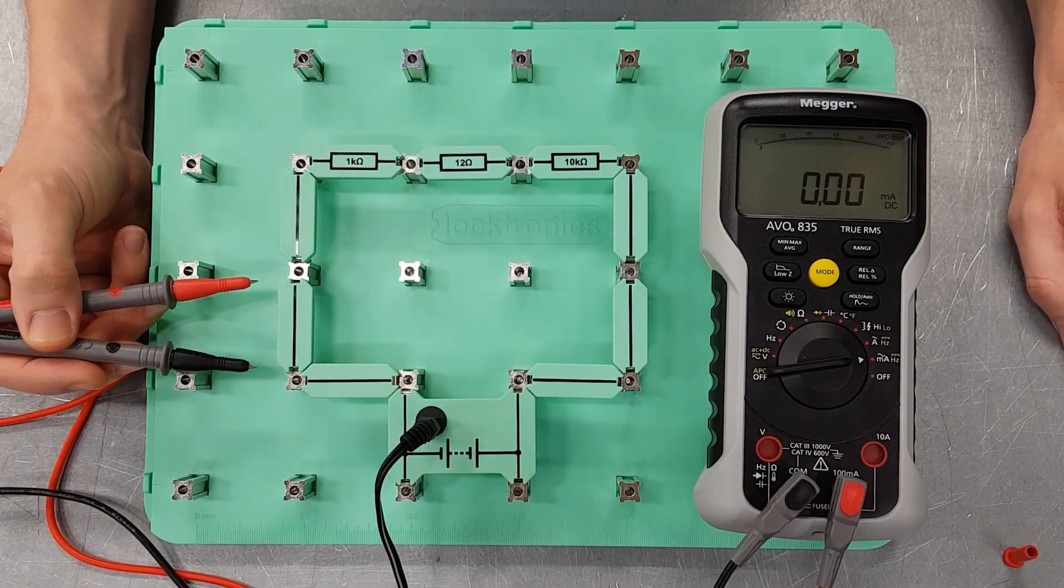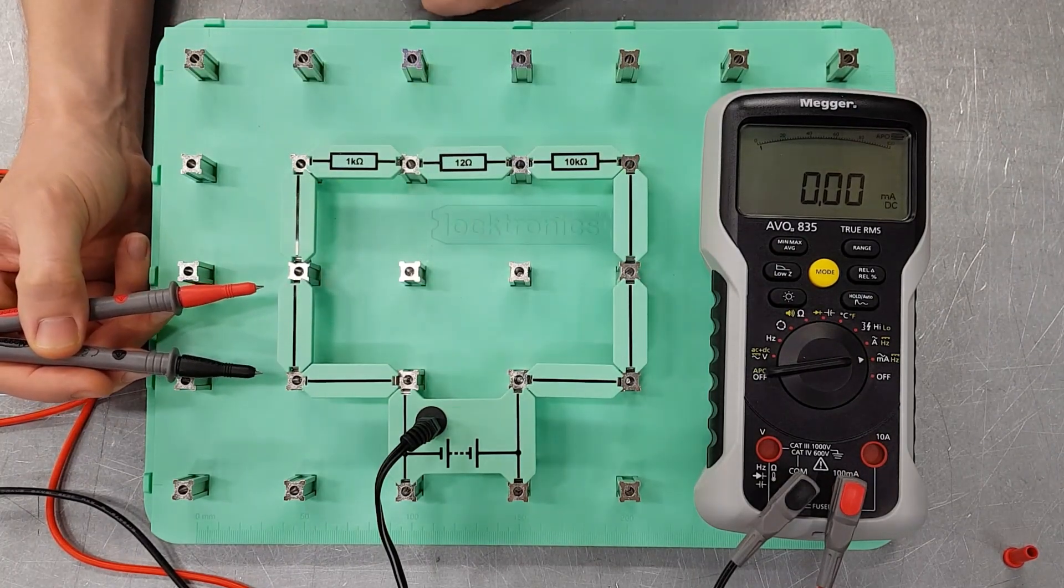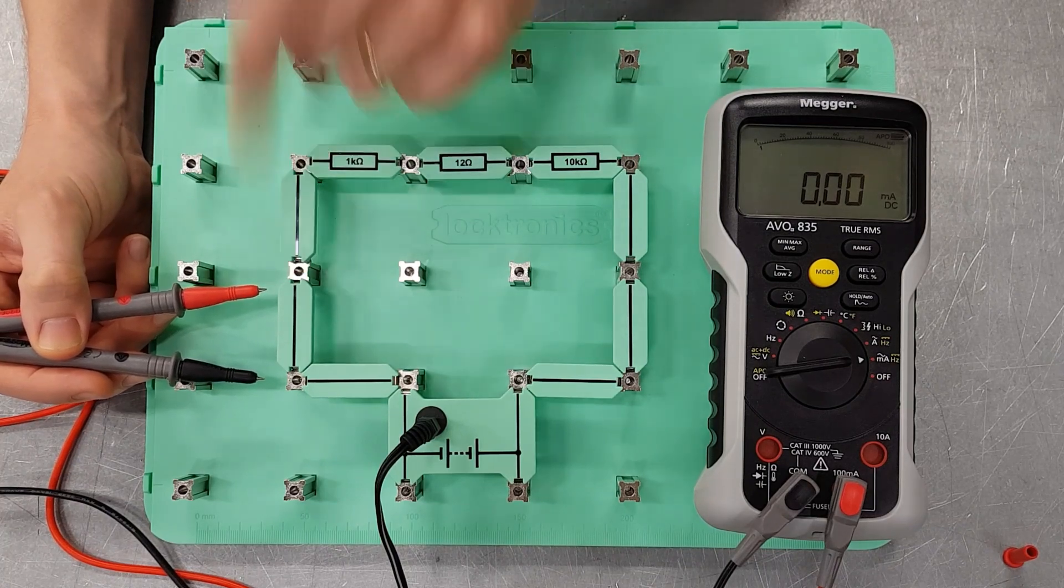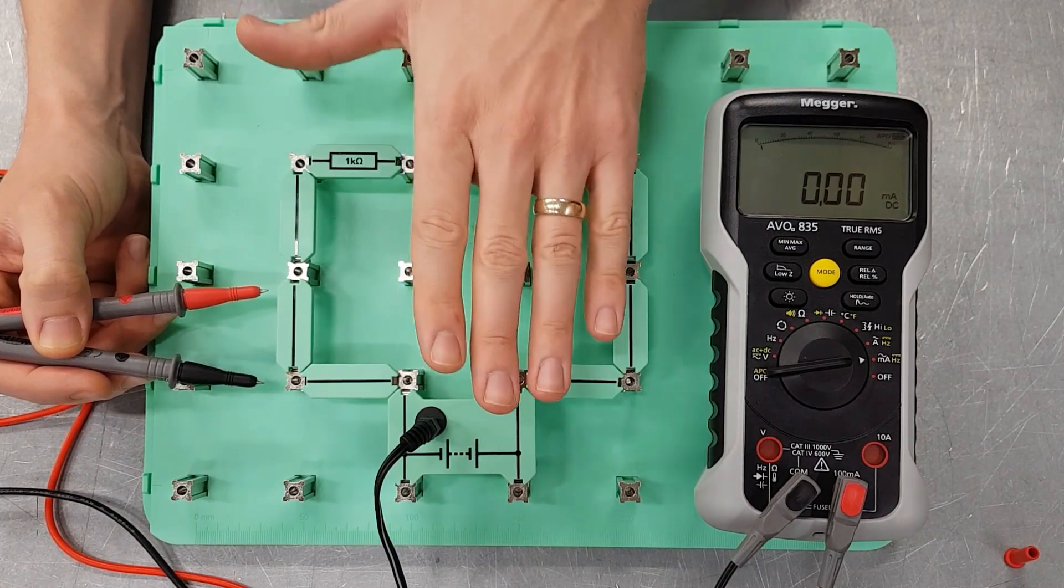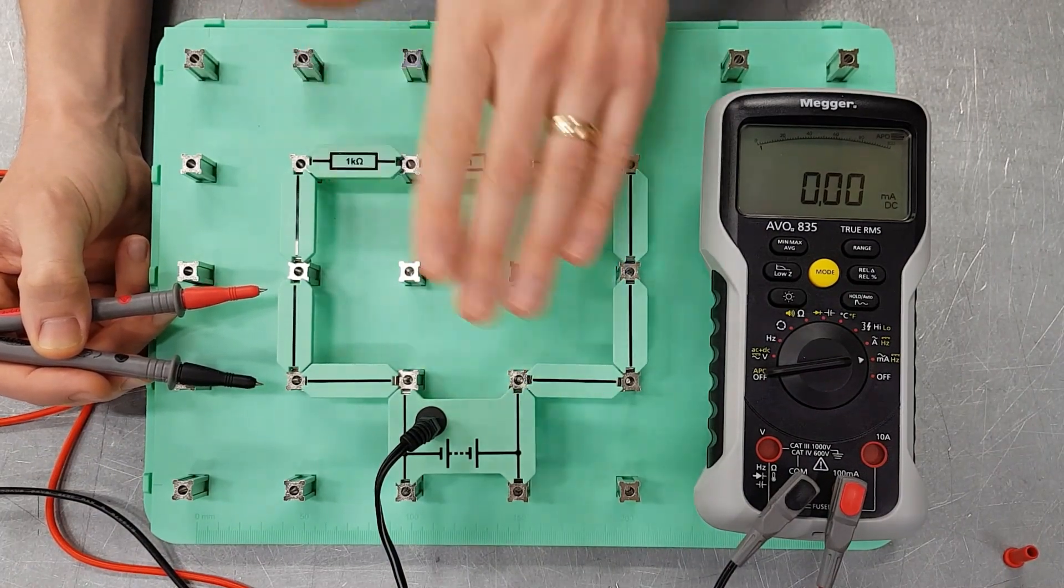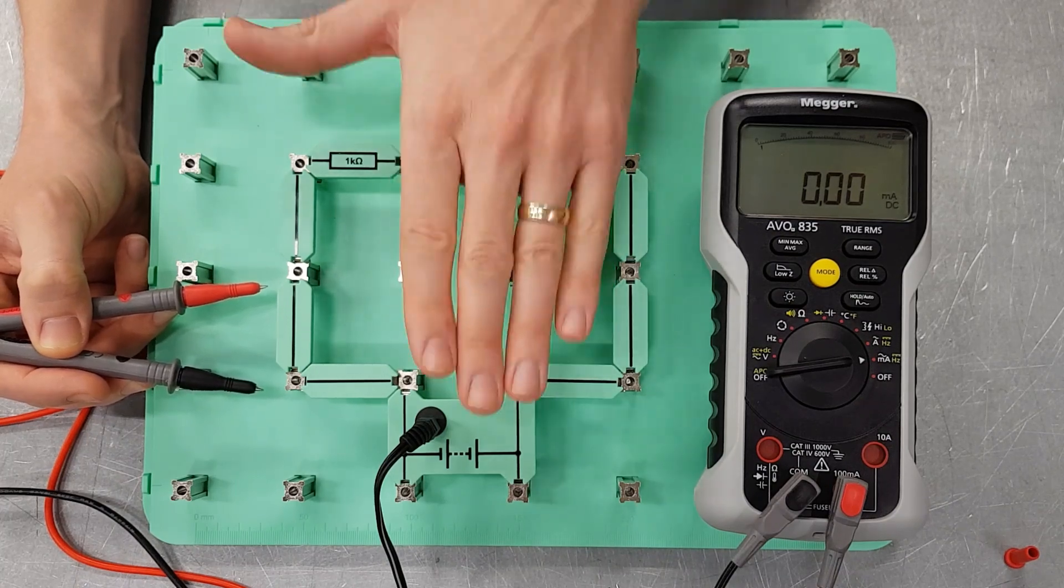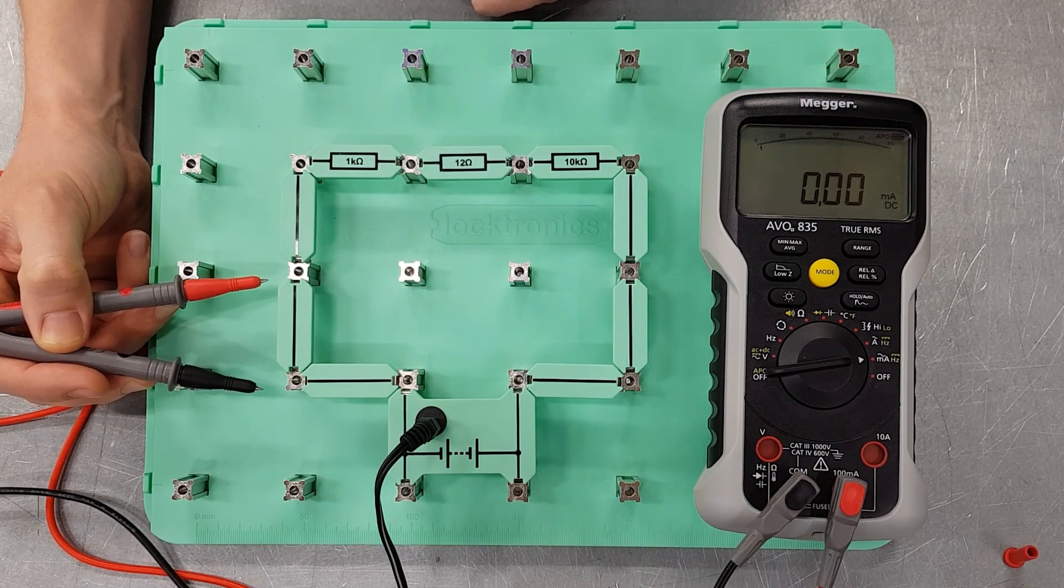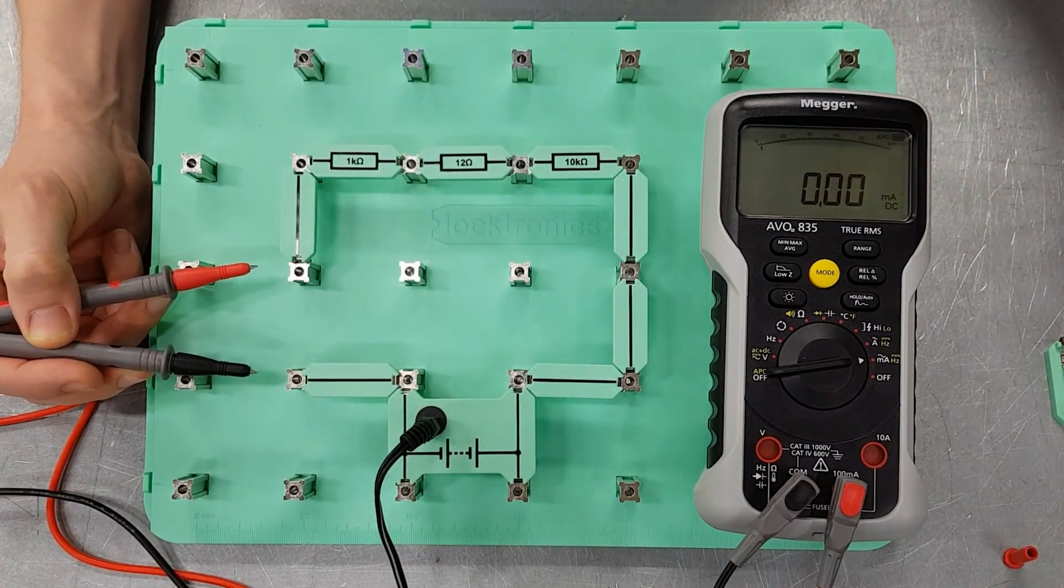Let's measure the current in this circuit now. We've got our circuit connected up. We've got current flowing through this series circuit. And we're going to measure what that current is. This is a classic exam situation. This is where the lecturer comes out in me. We always get asked in exams, how are ammeters connected into a circuit? And the answer is they're always connected in series.